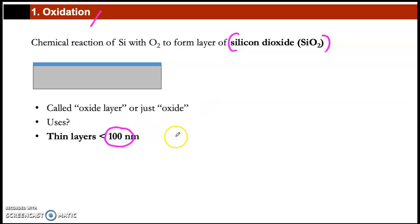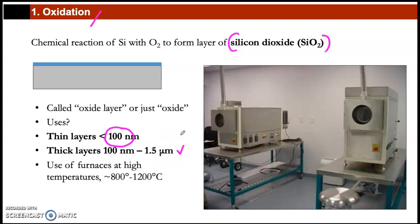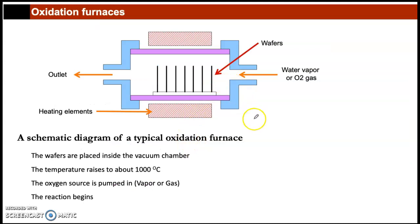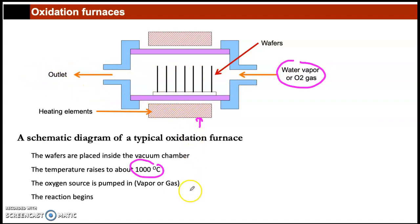The silicon oxide layer is usually very thin — less than 100 nanometers — but can go up to 1.5 micrometers. To perform oxidation you need a high-temperature furnace, operating between 800 and 1200 degrees Celsius. The furnace cross-section shows a heating element to reach 1000°C. The wafer is placed in the middle and oxygen or water vapor is introduced over the silicon substrate, with an outlet on the other side.